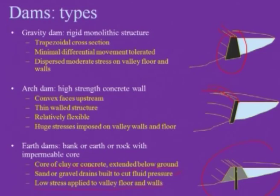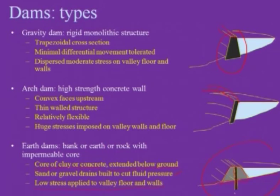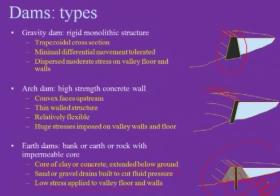Looking at the cross section of an embankment dam, the core is made of clay or concrete and extends beyond the ground surface. On the sides, it is surrounded by sand, rock, or gravel to reduce fluid pressure on the core. This results in low stress applied to the valley floor and walls.